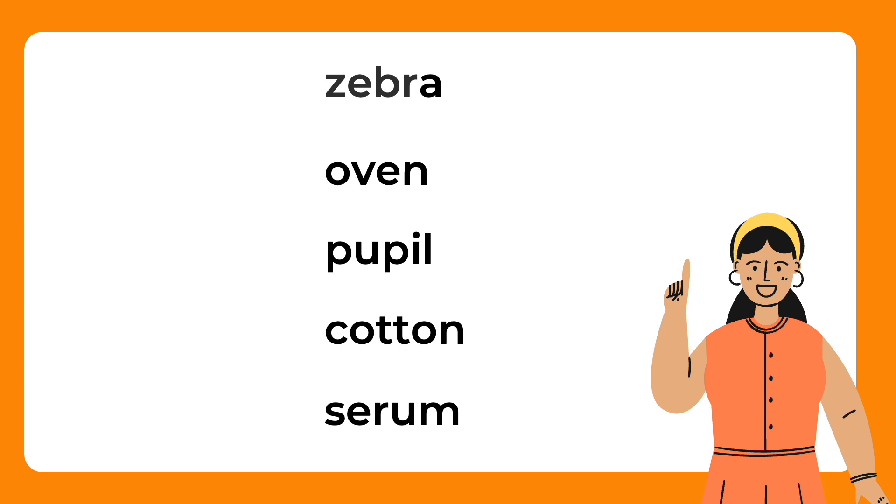Zebra, oven, pupil, cotton, seren. Do you have it?